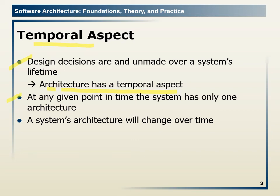At any given point in time, the system has only one architecture. We may have multiple files saved — multiple versions of our architecture diagram made in UML, Visio, or Microsoft Word — but only one of them will be or should be considered the system architecture at a given point, based on coding and implementation.